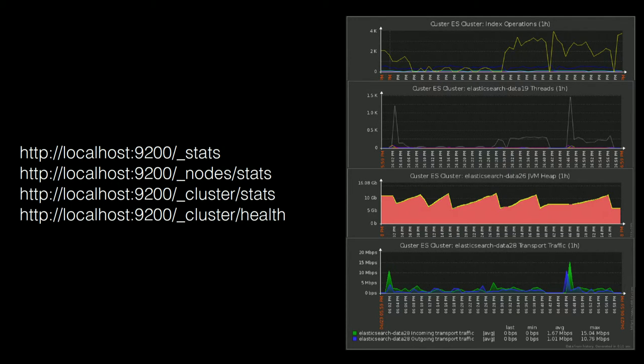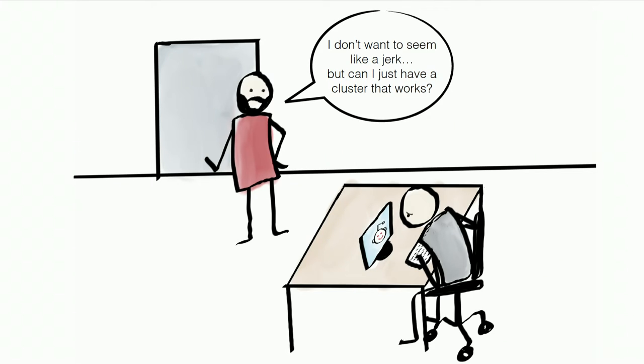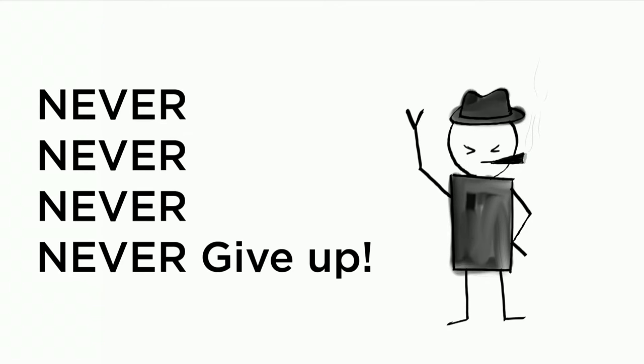Then we realized we have one advantage that Custer doesn't have. We can create a new battlefield and try to produce a different outcome. That's what we did, and this is where Custer got its name. We felt like we were in the battle of Little Bighorn, so we named this one Custer. We named the new cluster Winston because we were never, never, never, never giving up.